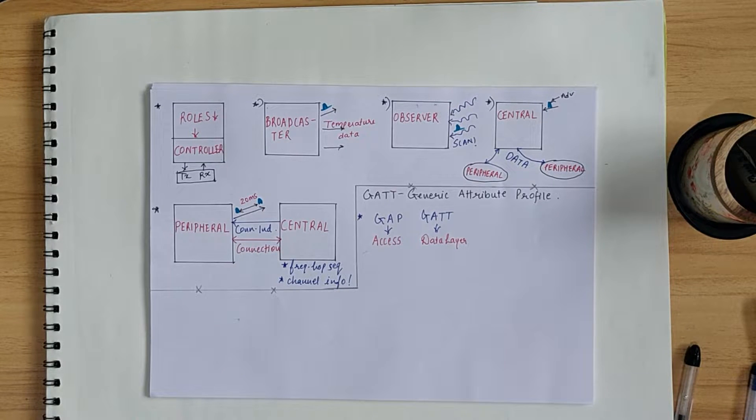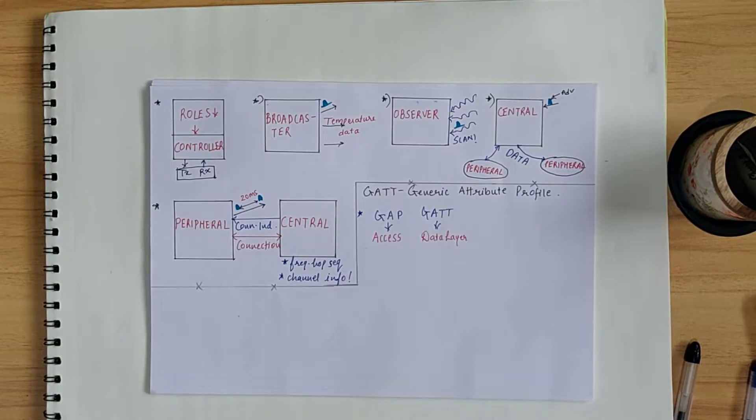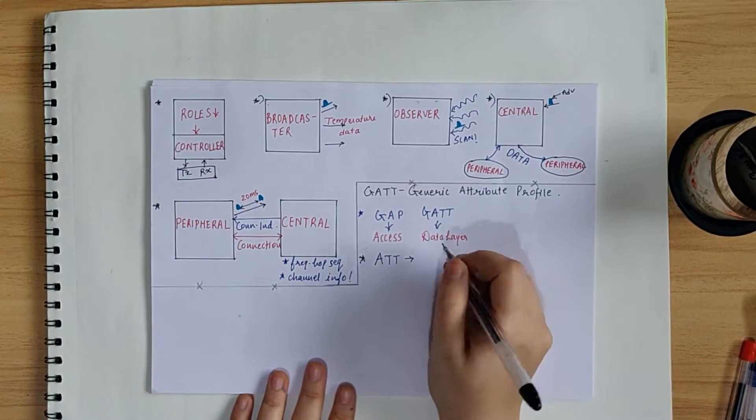Now, without a connection, it is not possible to have a bidirectional data transfer between two BLE devices, which means that the devices have already gone through the advertising process, which is governed by GAP. Now, GATT uses ATT protocol for transfer of data. ATT stands for Attributes Protocol.